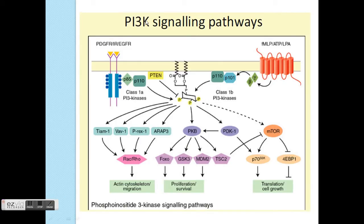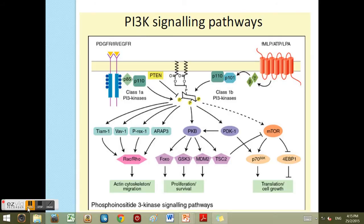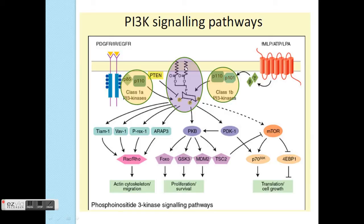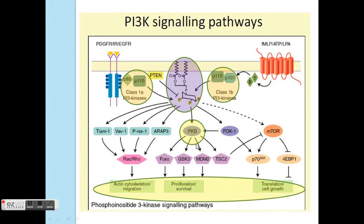The second pathway is called the PI3K pathway, which is very important in the cell survival process. PI3K refers to this particular molecule — the 3 refers to 3 phosphate groups. PI3K causes activation of one very important molecule called PKB, also famously known as AKT. This molecule drives the main downstream action of the PI3K pathway, causing effects such as proliferation, survival, migration, and cell growth.